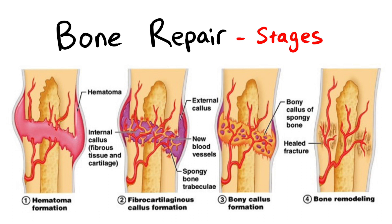Osteoblasts then begin to synthesise new bone tissue at the fracture site, gradually bridging the gap between broken bone ends. As the new bone is formed, it undergoes a remodelling process to reshape and strengthen it, similar to the continuous bone remodelling that occurs in healthy bones.